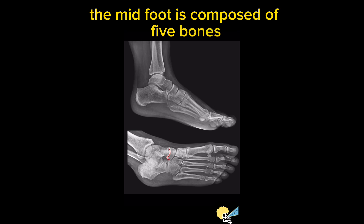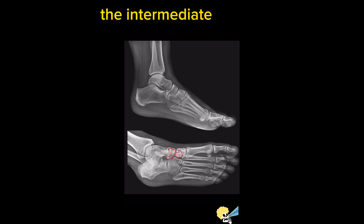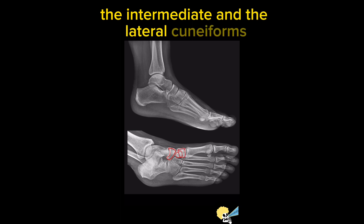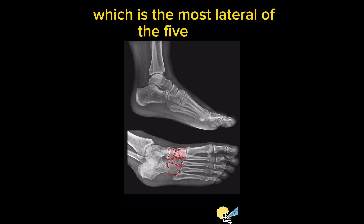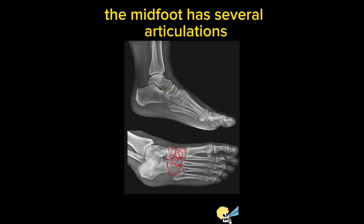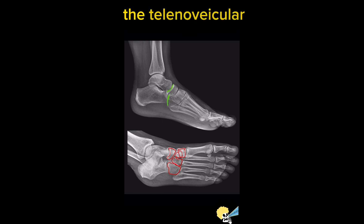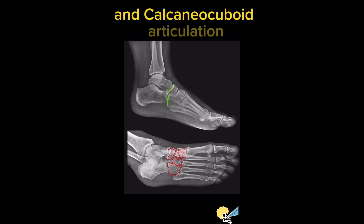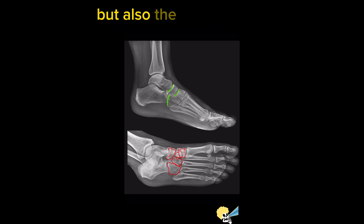The midfoot is composed of five bones: the navicular bone, the three cuneiforms — medial, intermediate, and lateral — and the cuboid bone, which is the most lateral of the five bones. The midfoot has several articulations, but three important ones are the talonavicular and the calcaneus-cuboid articulations, which are part of the two-part Chopart articulation.